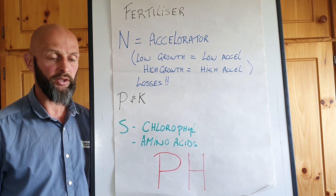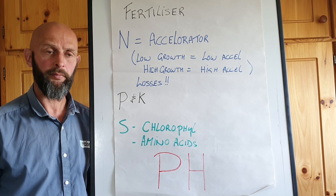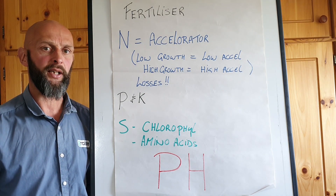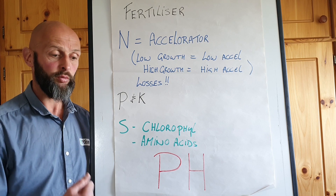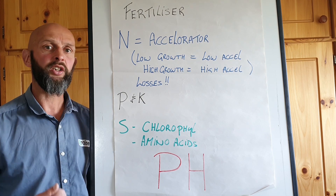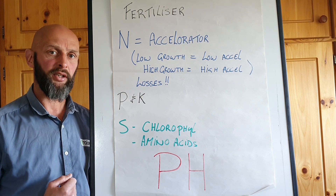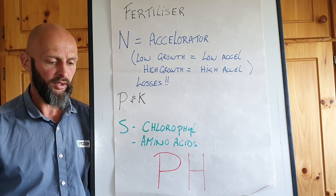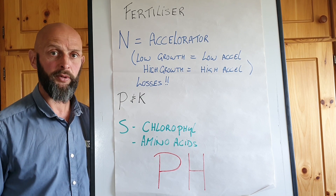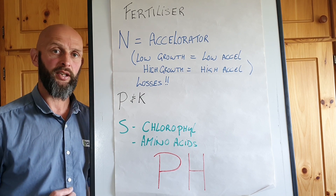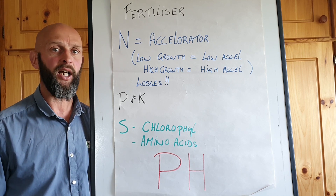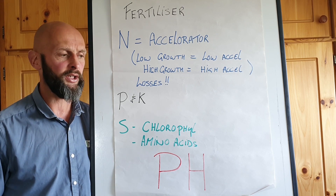If the dry period continues for some time, you'll also find that nitrate will build up around the root of the plant, and so when the first rain comes, nitrogen is not going to be a limiting factor to optimum growth rates. So even at that time, make sure that there's follow-up rain in the forecast and get out with some chemical nitrogen in the second rain rather than at the first sight of any moisture.